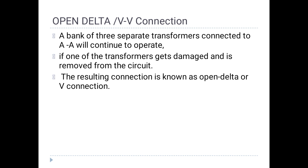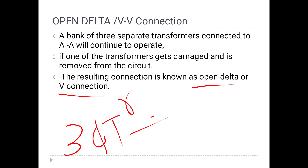What is OpenDelta and VV connection? A bank of 3 separate transformers connected in delta will continue to operate. If one of the transformers gets damaged and is removed from the circuit, the resulting connection is known as OpenDelta or VV connection. That is, we have 3 transformers — a 3-phase transformer made of 3 units of single-phase transformers.